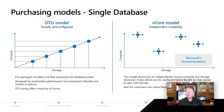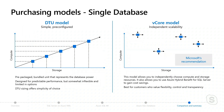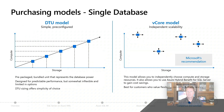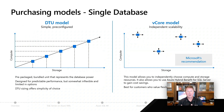You have something called a database transaction unit model, which is one of our earlier models we first released with what was called SQL Azure back then, where you pick things based on a database transaction unit measurement and different tiers within that. The vCore model is actually what we recommend.